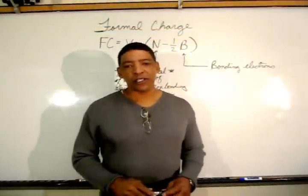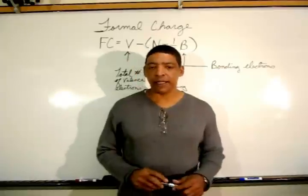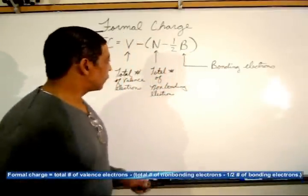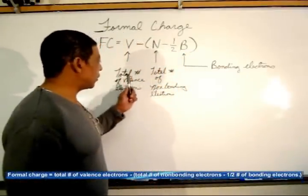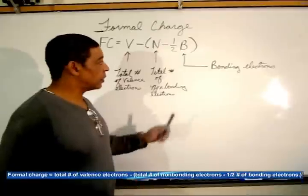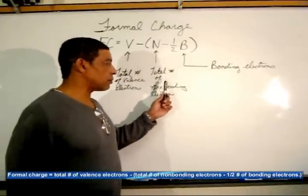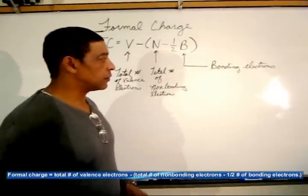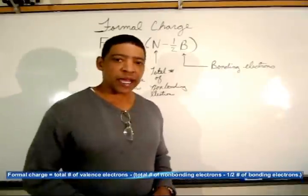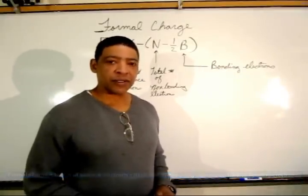The formal charge for atoms in a compound may be determined as follows. The formal charge is equal to the total number of valence electrons minus the total number of non-bonding electrons minus one-half the total number of bonding electrons.